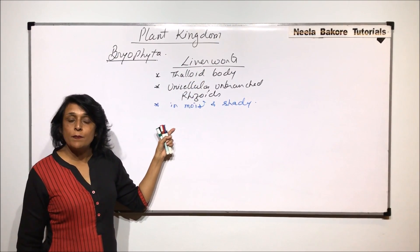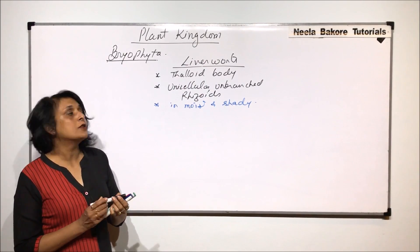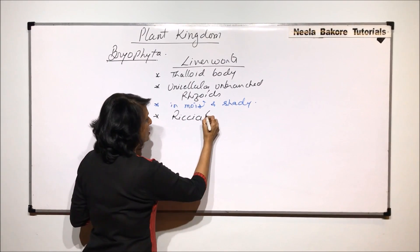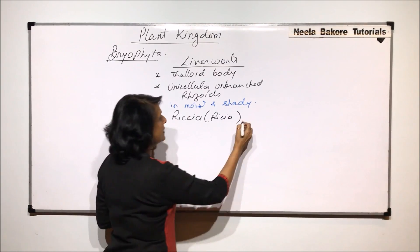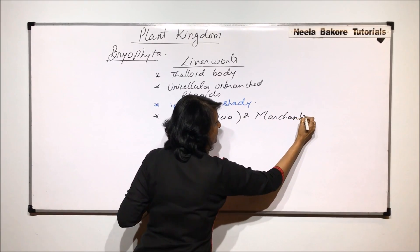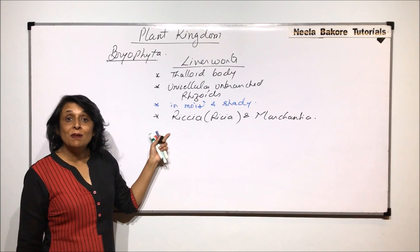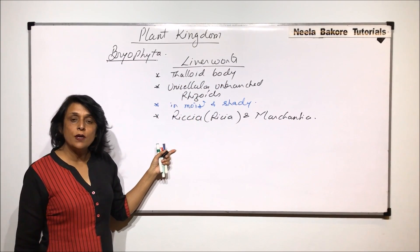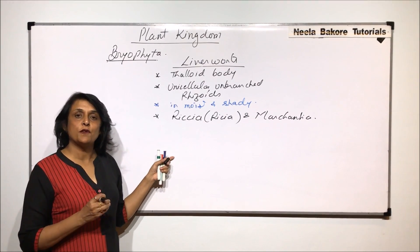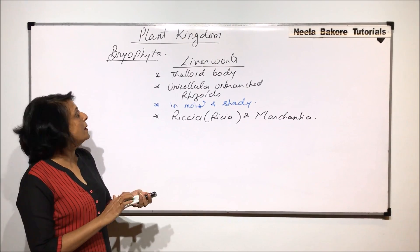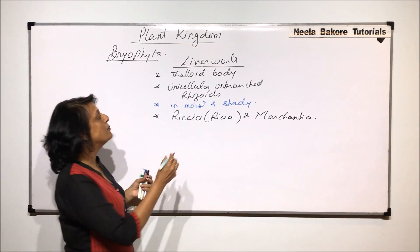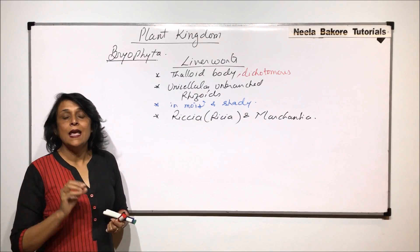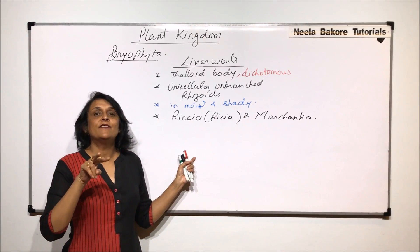All liverworts, being bryophytes, fall under the same category. We will talk about two examples: Riccia (spelled R-I-C-C-I-A) and Marchantia. Both have thallus-like bodies, both have unicellular unbranched rhizoids, and both grow in moist places. One common feature is that the thallus-like body shows dichotomous branching, meaning every branch divides into only two — there is bifurcation.